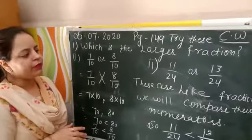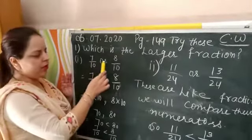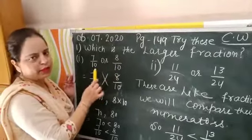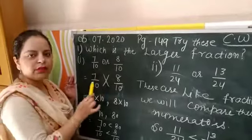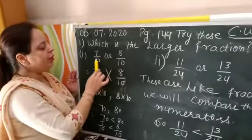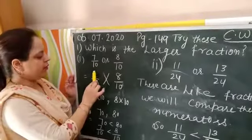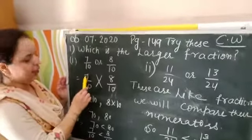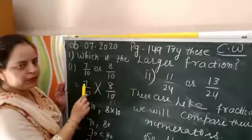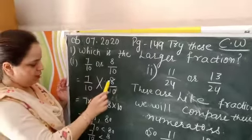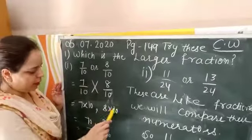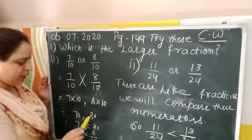We have 7 by 10 and 8 by 10. You can see the denominator has the same number, 10, which means these are like fractions. Applying cross multiplication: we multiply 7 × 10, which gives 70, and 8 × 10, which gives 80.